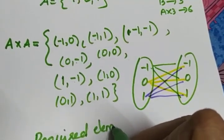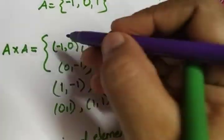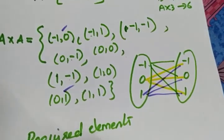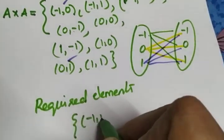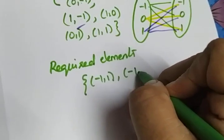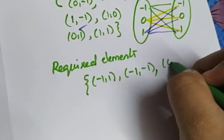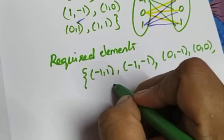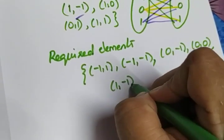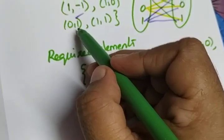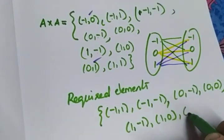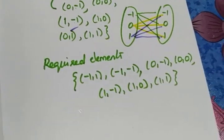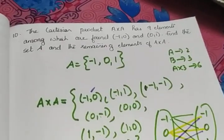For the remaining elements, avoid the two given ordered pairs (-1,0) and (0,1). The answer is: (-1,-1), (-1,1), (0,-1), (0,0), (1,-1), (1,0), and (1,1). These are the balance elements in A cross A.